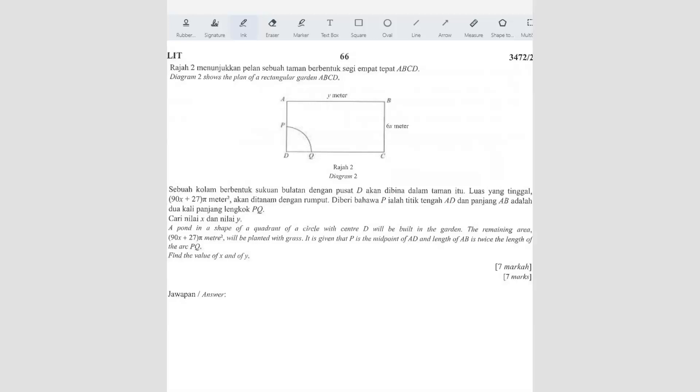Alright, question number 5. Diagram 2 shows the plan of a rectangular garden ABCD. Now, a pond in a shape of a quadrant of a circle with center D will be built in the garden.